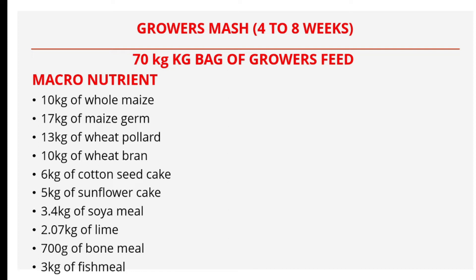The reason for adding lime and bone meal is that they help strengthen the eggshell. As growers are growing, they are heading toward egg production, so you must start preparing them for it. Lime also serves as grit — since these birds are not on free range, lime helps with digestion. The DCP for grower mash should be between 16 and 18 percent, making the pullets grow fast and prepare for egg laying.